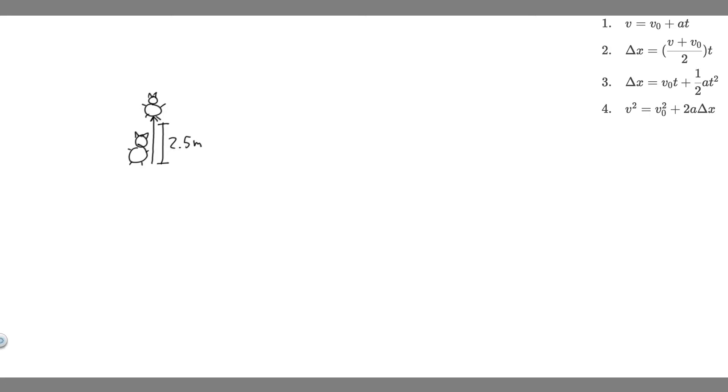In this problem, we're told a kangaroo can jump over an object 2.5 meters high. Part A: calculate its vertical speed when it leaves the ground, and Part B: how long is it in the air?